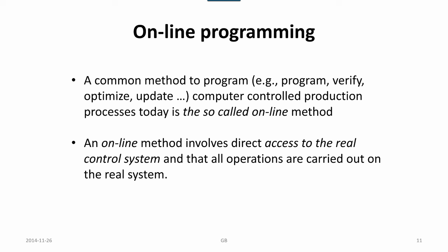The online method involves direct access to the real control system, and all operations are carried out on the real system. The real system is the control system, the robot, and all peripherals related and connected to the robot, with some limitations. Because if the process is to be carried out, they could be restricted. We do not operate like laser cutting or grinding operations or things that from a work environment point of view might cause injuries to the operator. Some processes can be checked, others cannot be checked for natural reasons. They have to be run remotely and checked by other means.